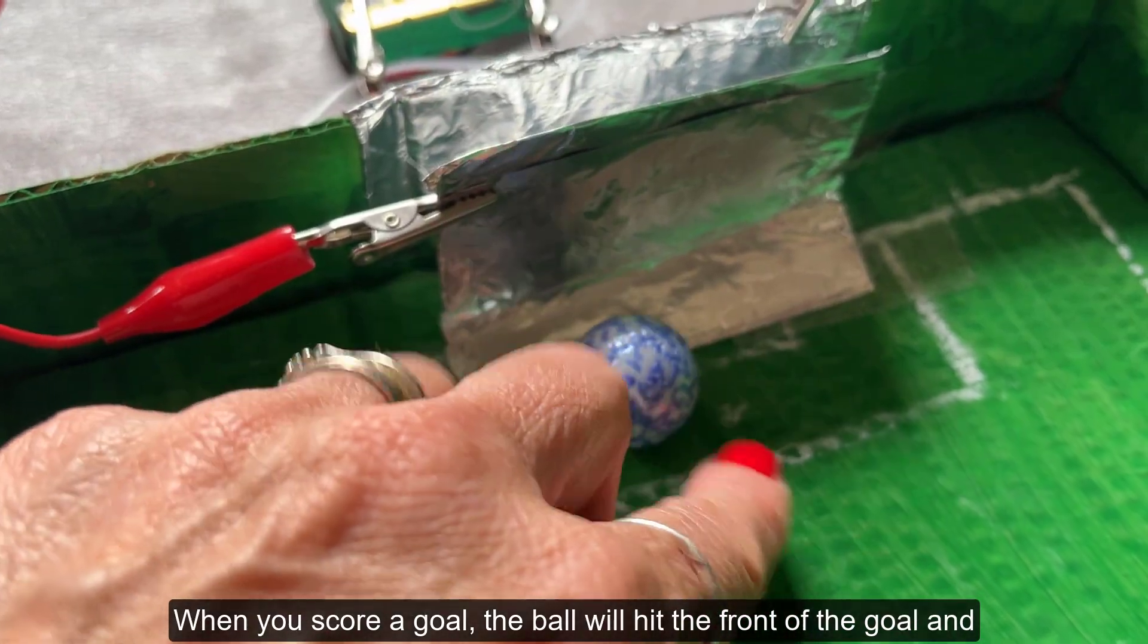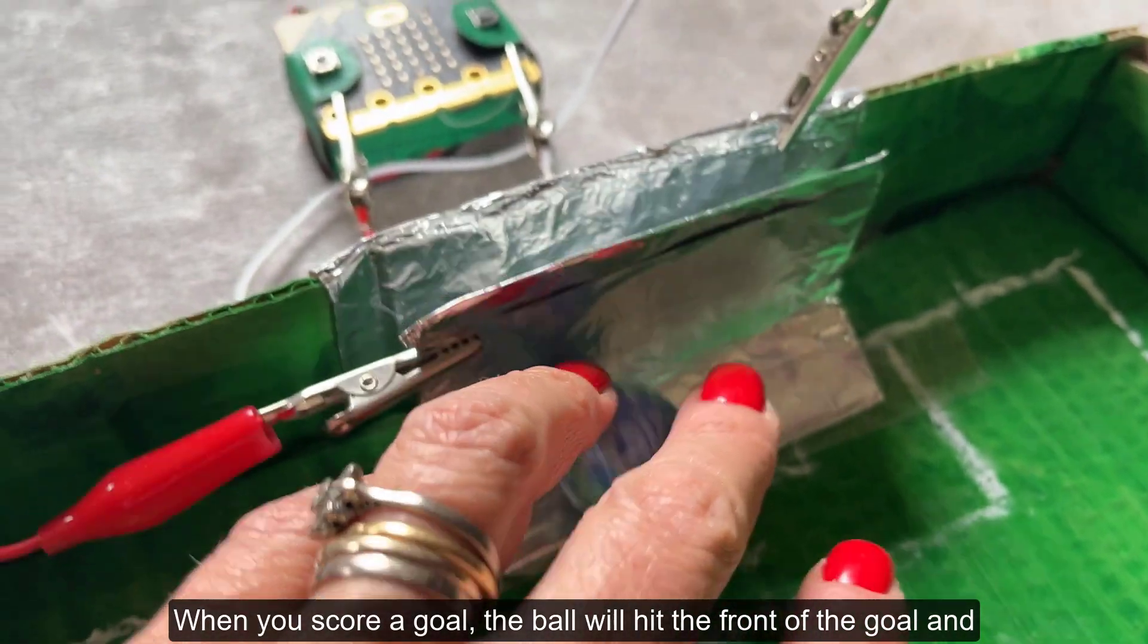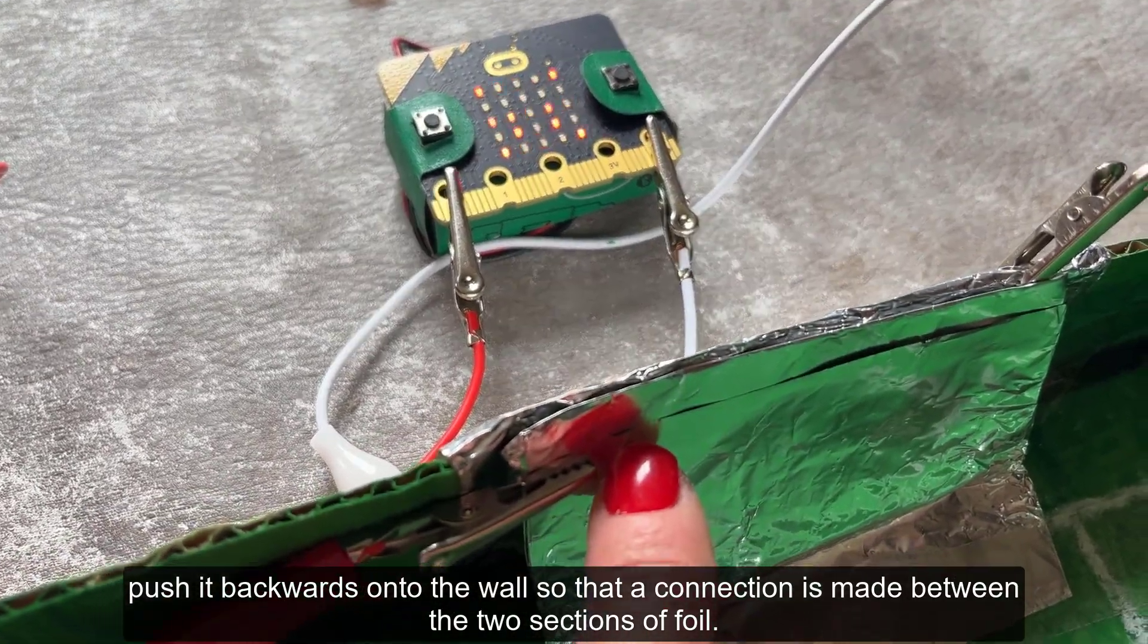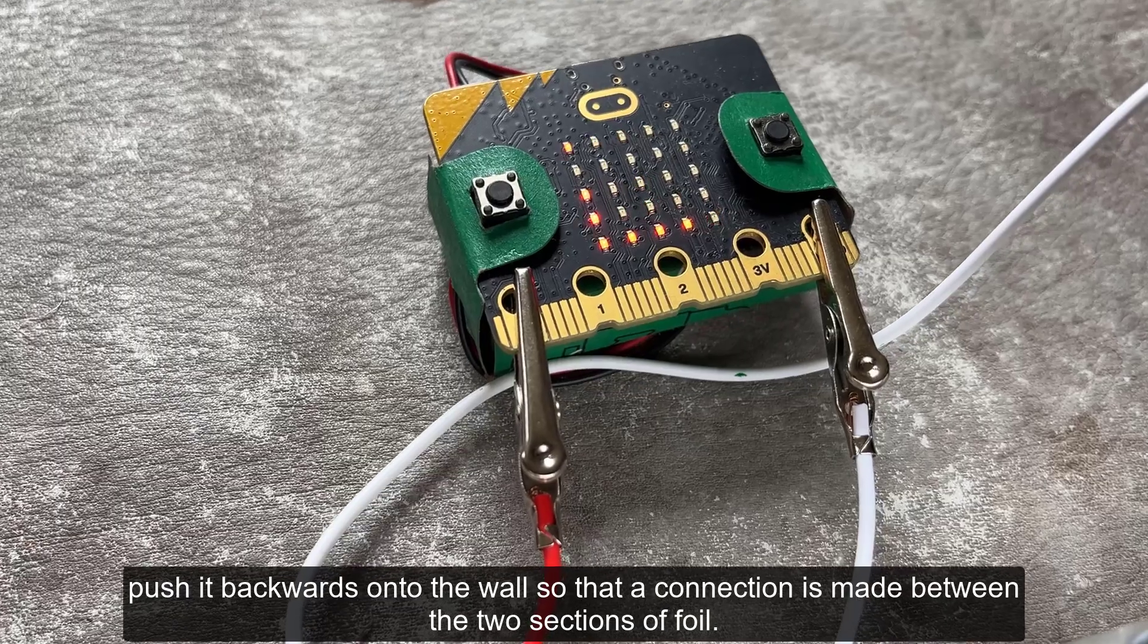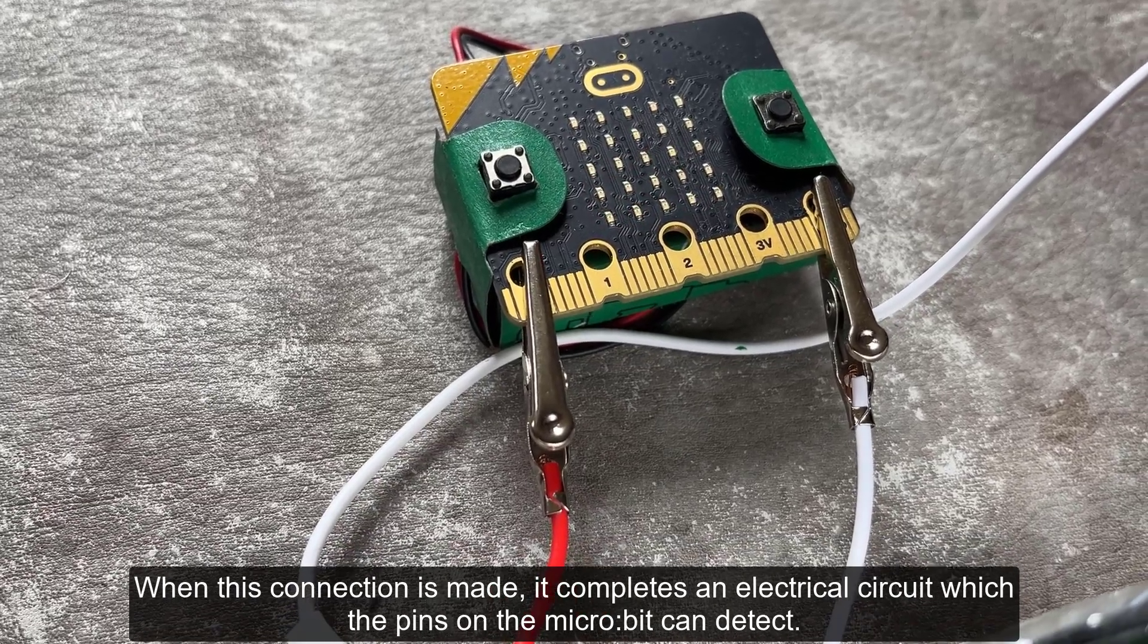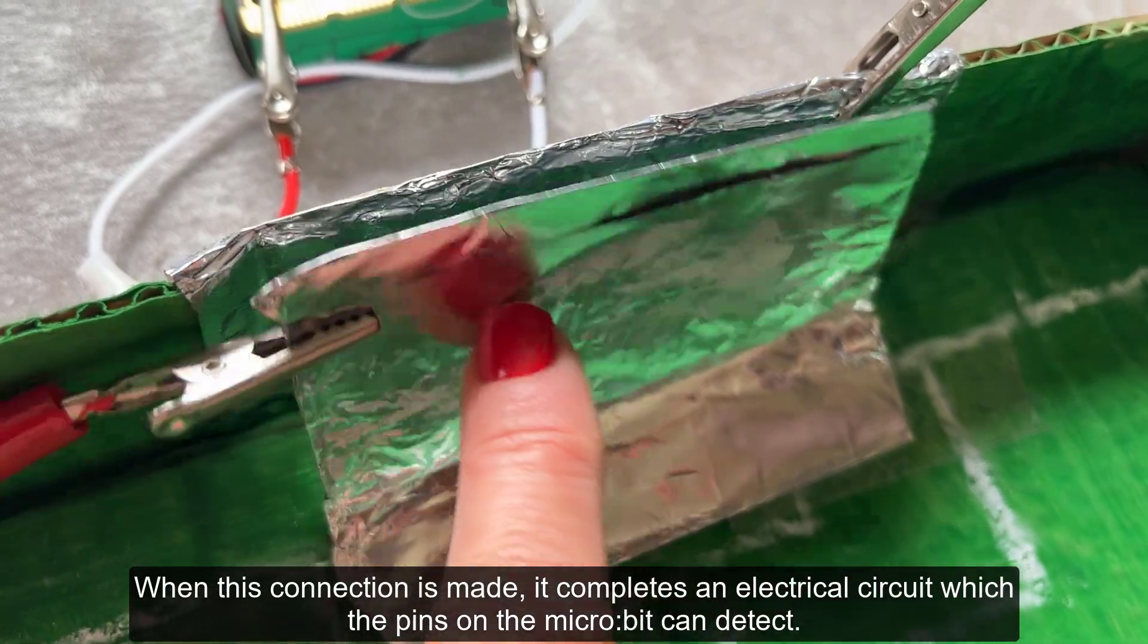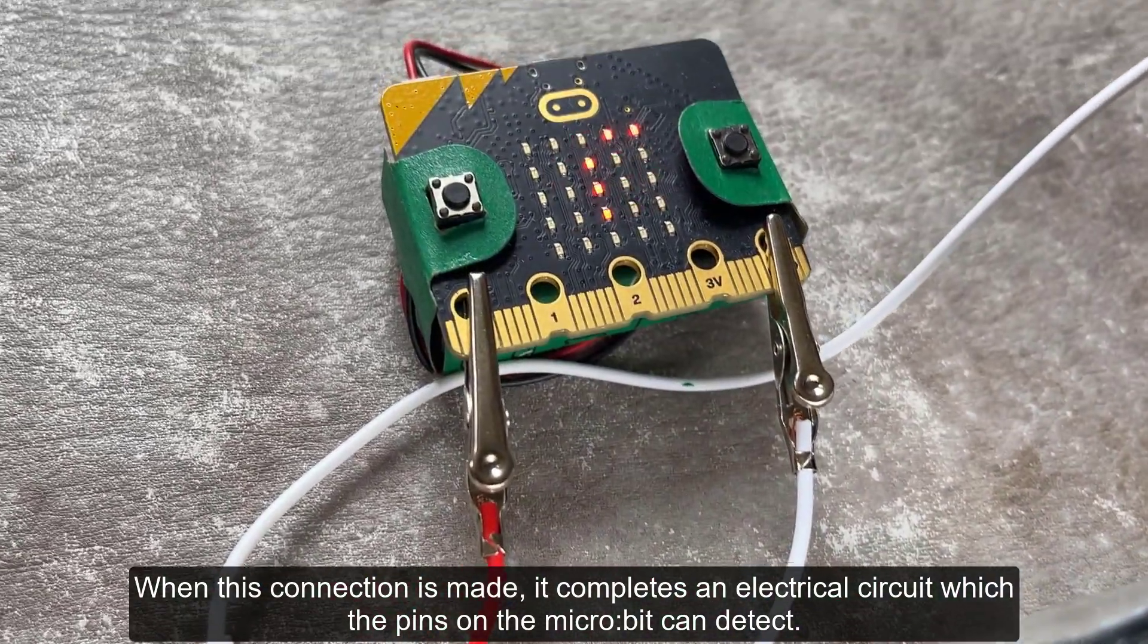When you score a goal, the ball will hit the front of the goal and push it backwards onto the wall so that a connection is made between the two sections of foil. When this connection is made, it completes an electrical circuit which the pins on the microbit can detect.